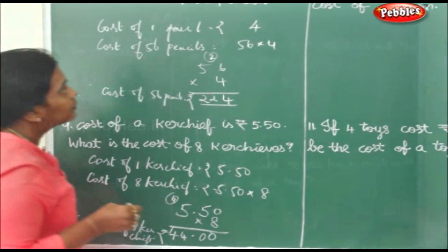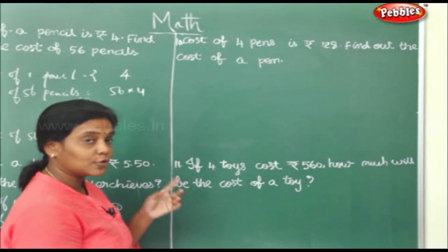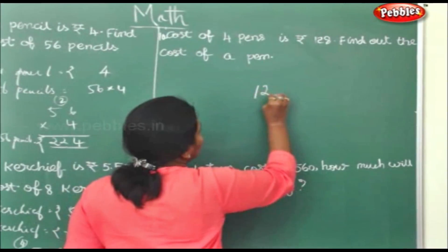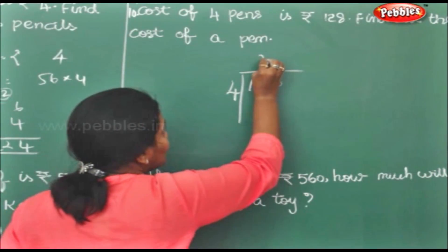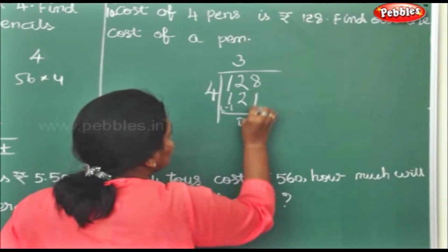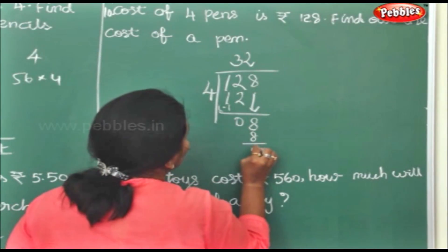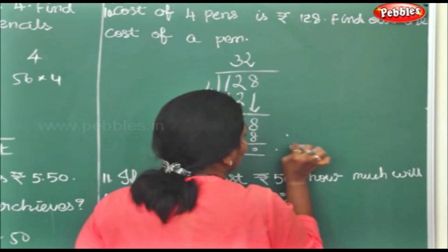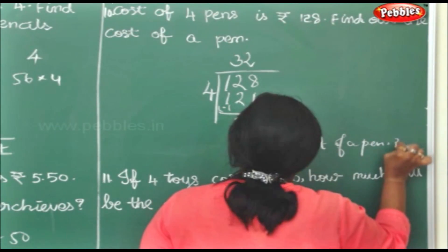Cost of 4 pens is rupees 128. Find the cost of a pen. Divide 128 by 4. 4 into 12 is 3, bring down 8, 4 into 8 is 2. So cost of a pen is rupees 32.